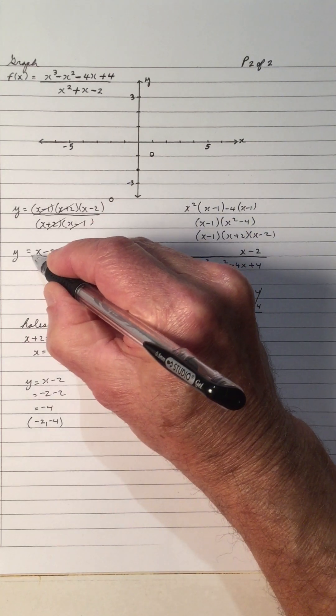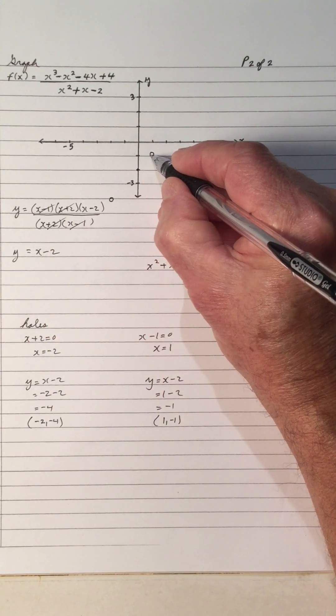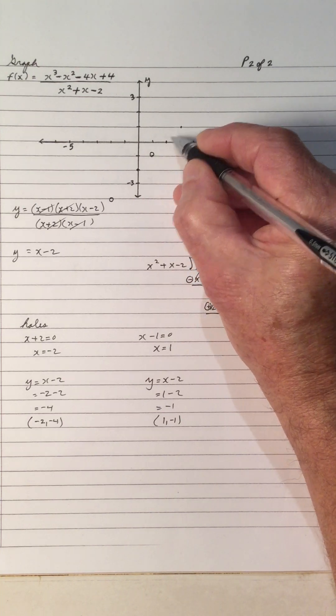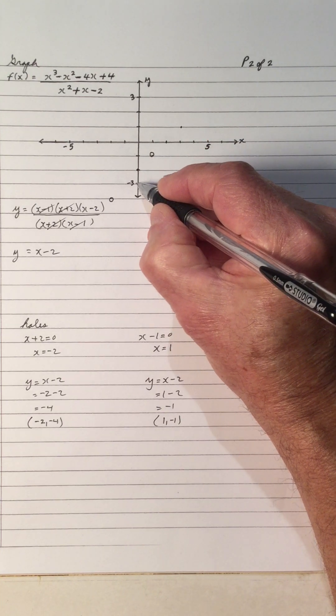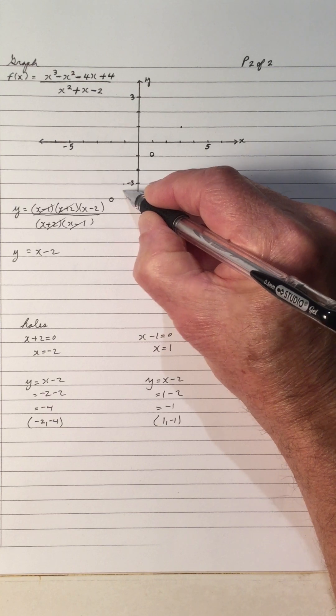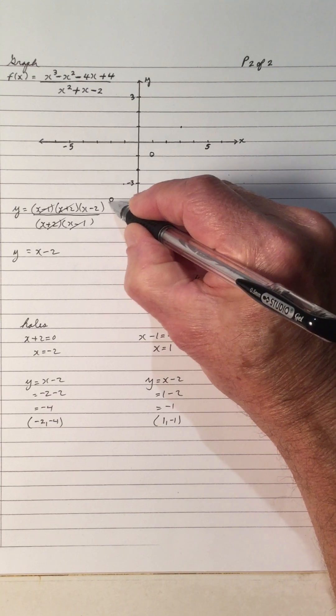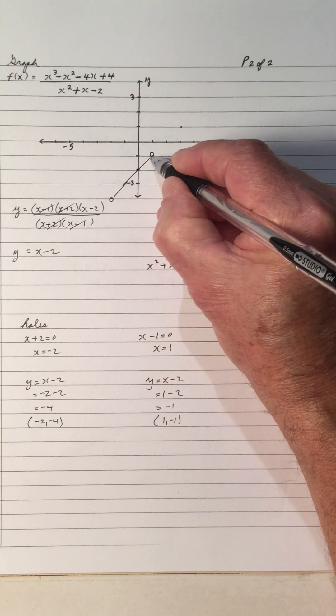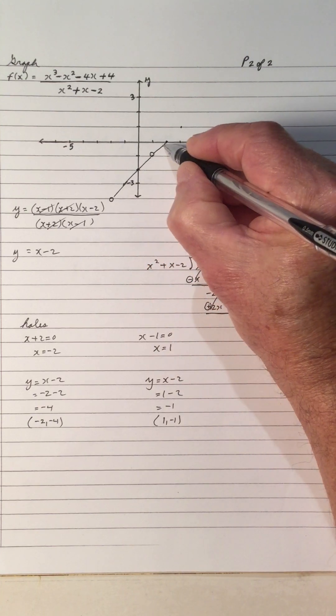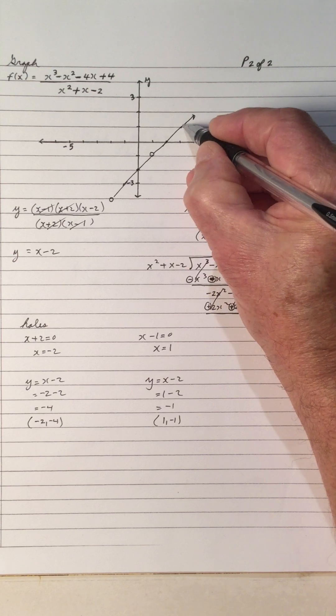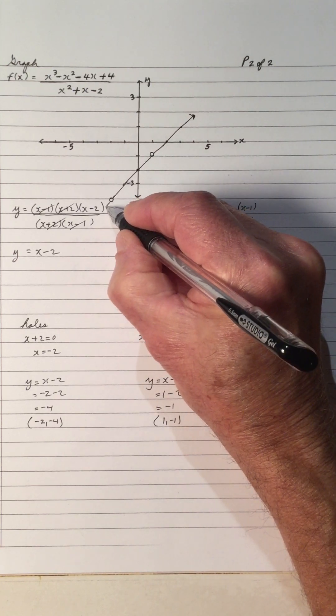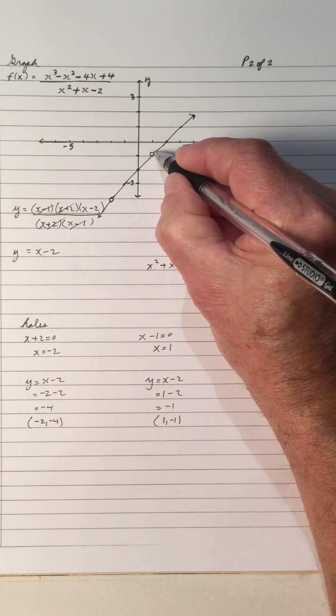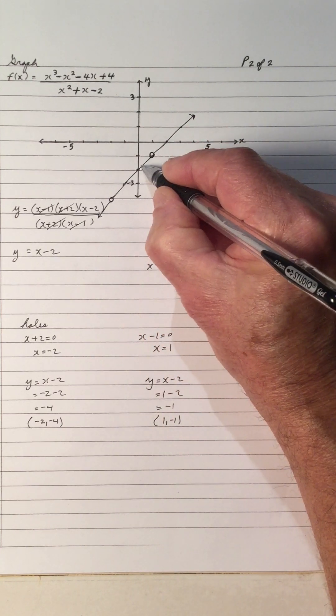And the slope is 1, 1 over 1. So we go up 1, right 1, up 1, right 1, up 1, right 1. Or we can go down 1, left 1, down 1, left 1. So there's the line, right there. And it goes on down through like this. So there's a hole there, and the hole there in this.